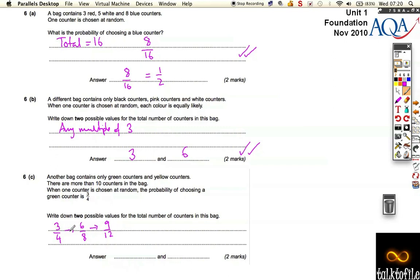If we thought about this, all these fractions are the same as three quarters. If there was nine green counters, there would have to be three yellow counters. And it gives us a total more than twelve. More than ten overall, because there's twelve.